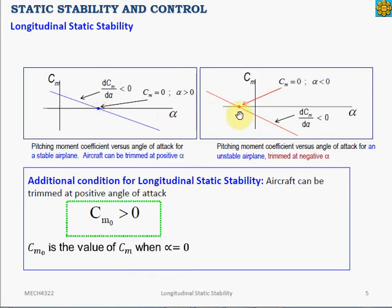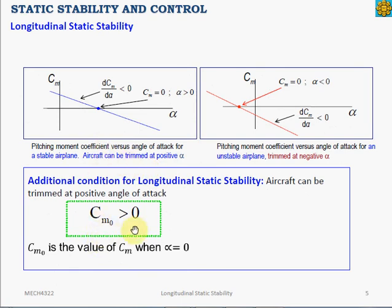So there are two conditions for achieving longitudinal static stability: first, a negative slope of the CM-alpha curve; and second, the ability to trim at a positive angle of attack. Mathematically, the second condition means CM0 must be greater than zero, where CM0 is the pitching moment coefficient at zero alpha.